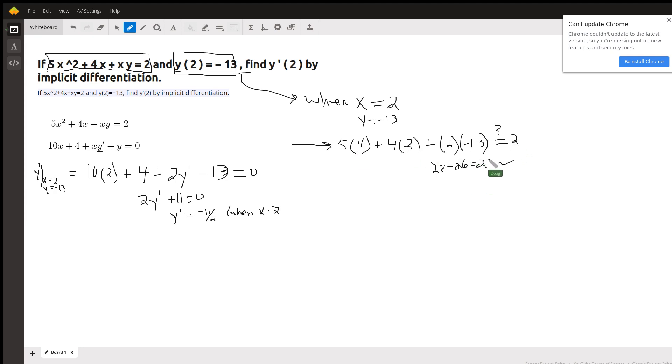Now we're going to implicitly find y prime, which means we're assuming y is a function of x. That means when we take the derivative of y, we have to also apply the chain rule, multiplying by the derivative of the inside.